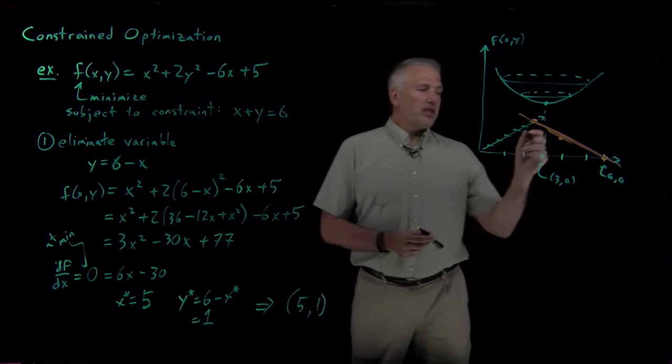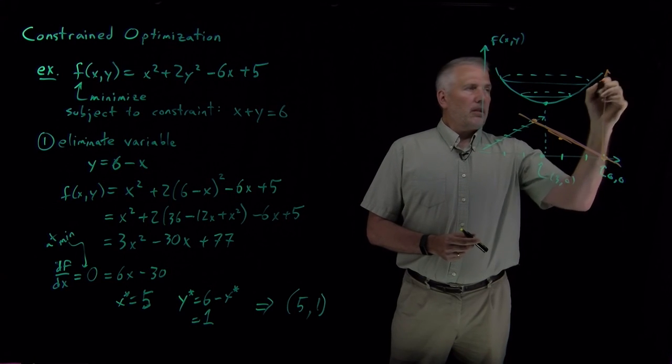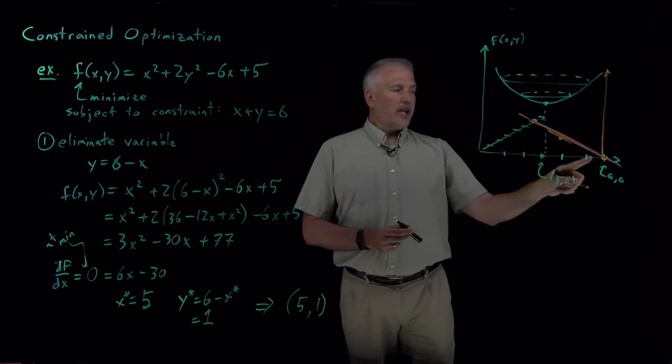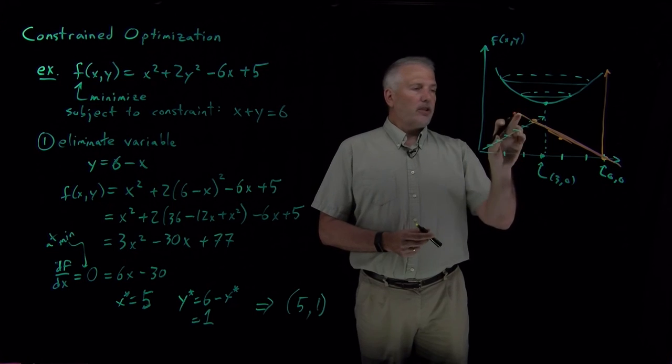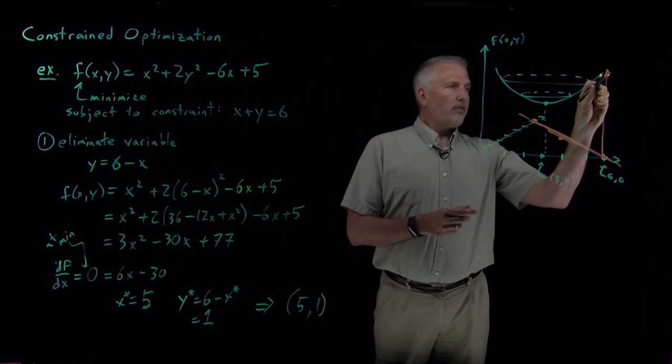What I'm really interested in is if I calculate the value of the function at 6, 0, or at 0, 6, and so on, that gives me certain particular values of this function.